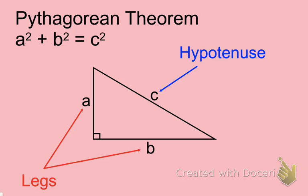The two sides that form the 90 degree angle are sides A and B, and those sides are known as legs. The two legs will always connect to form a 90 degree angle.